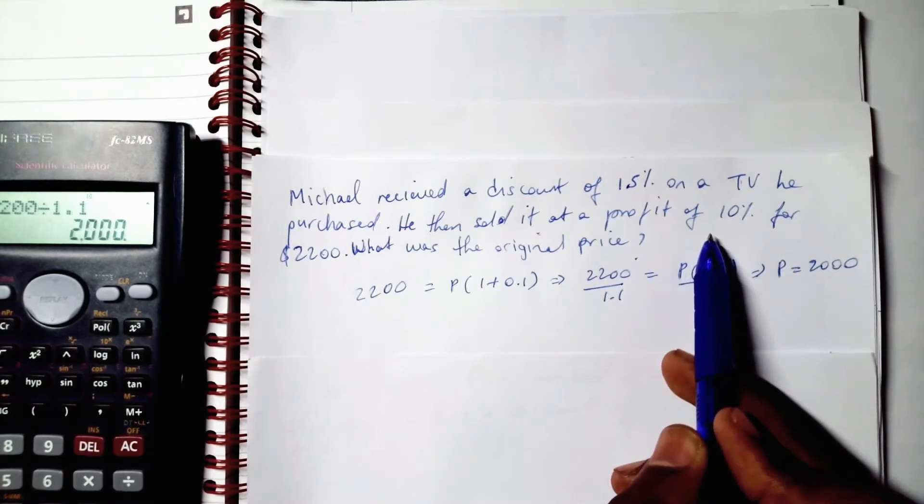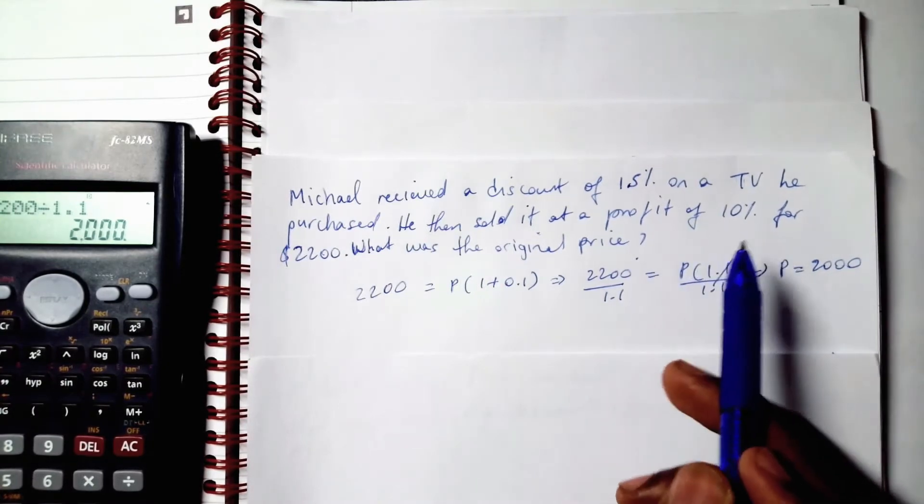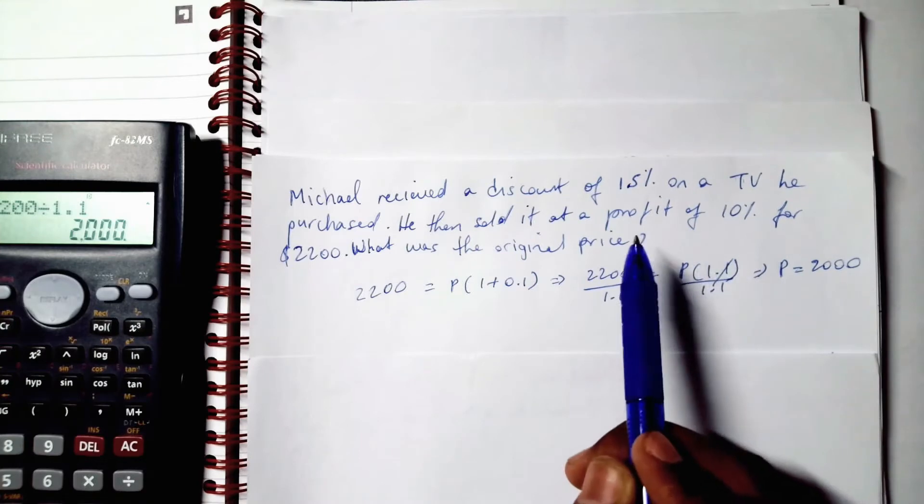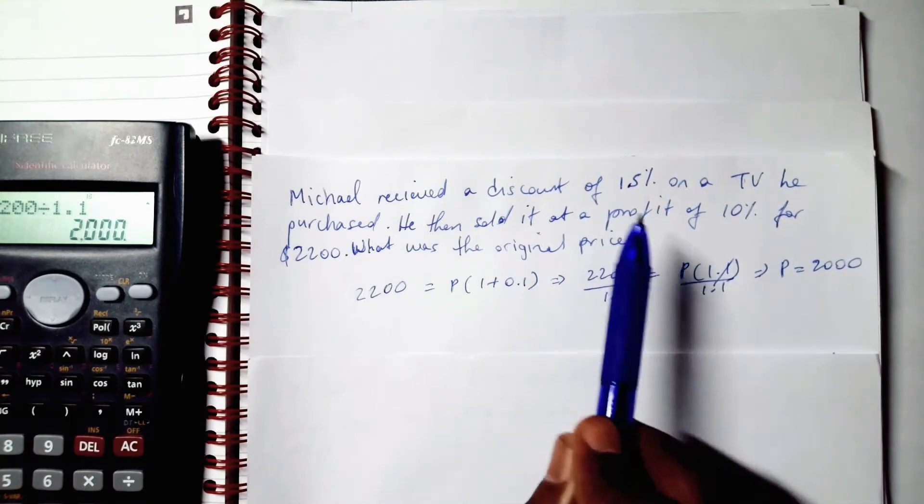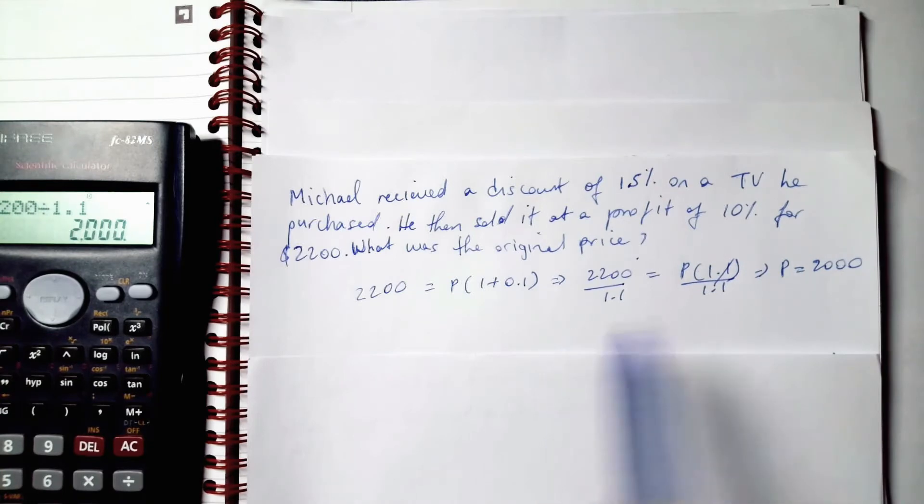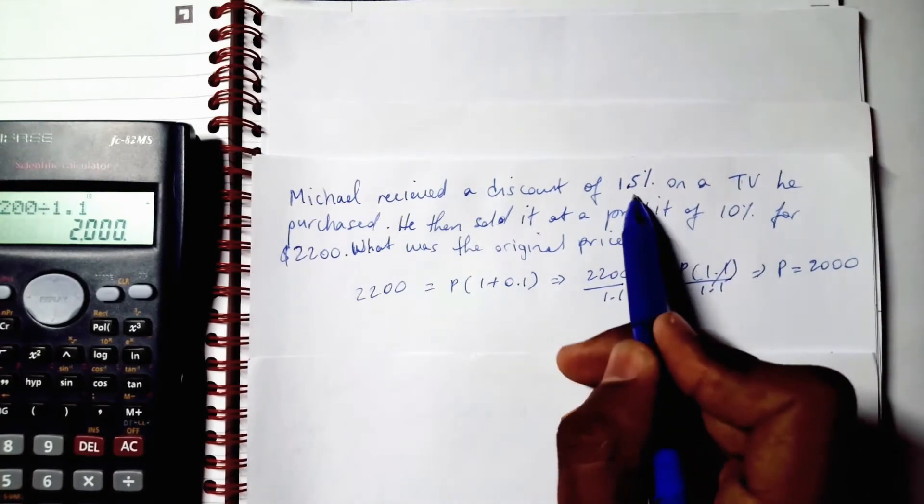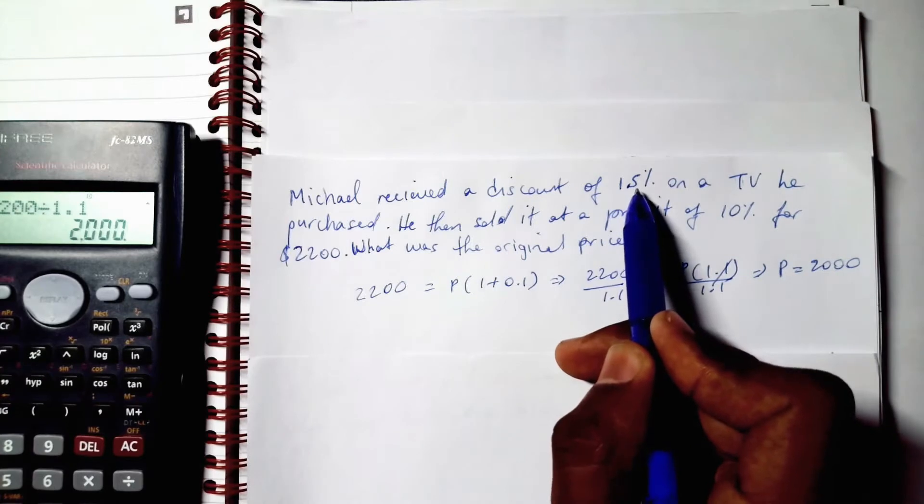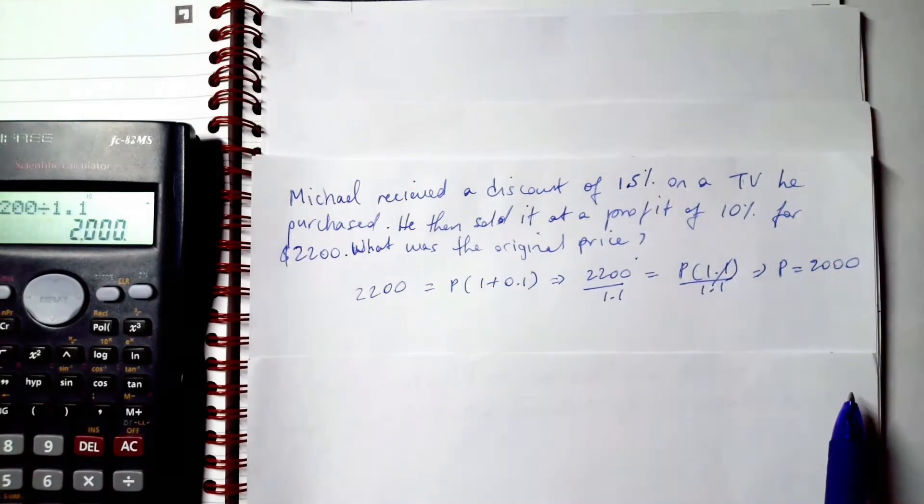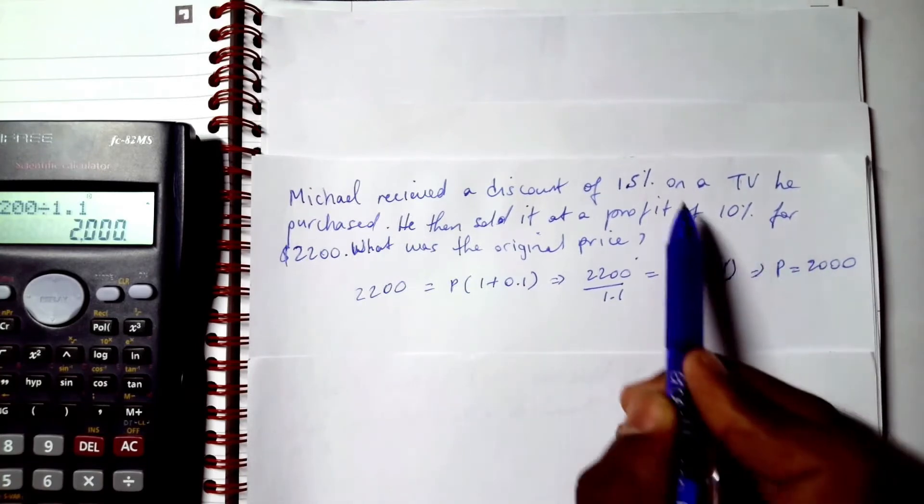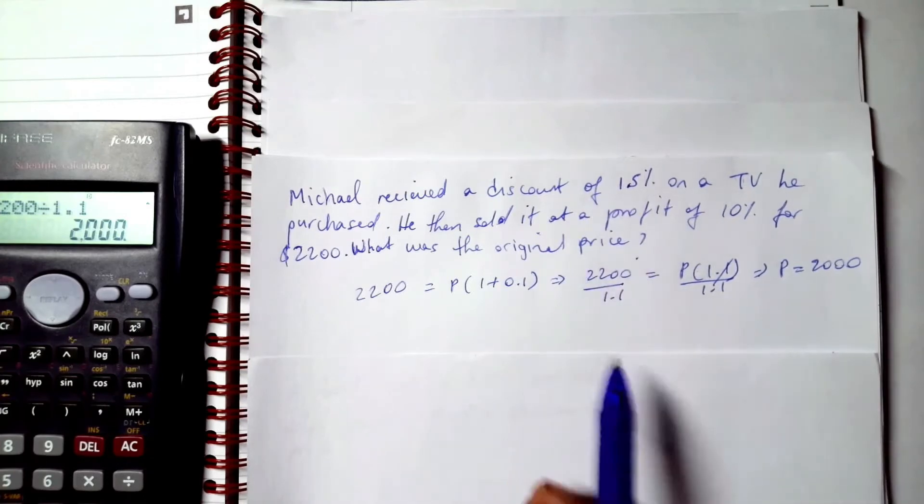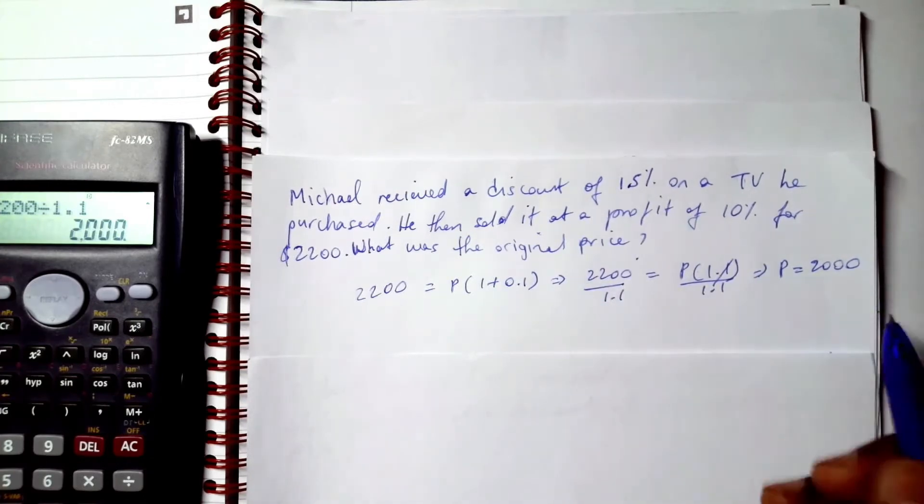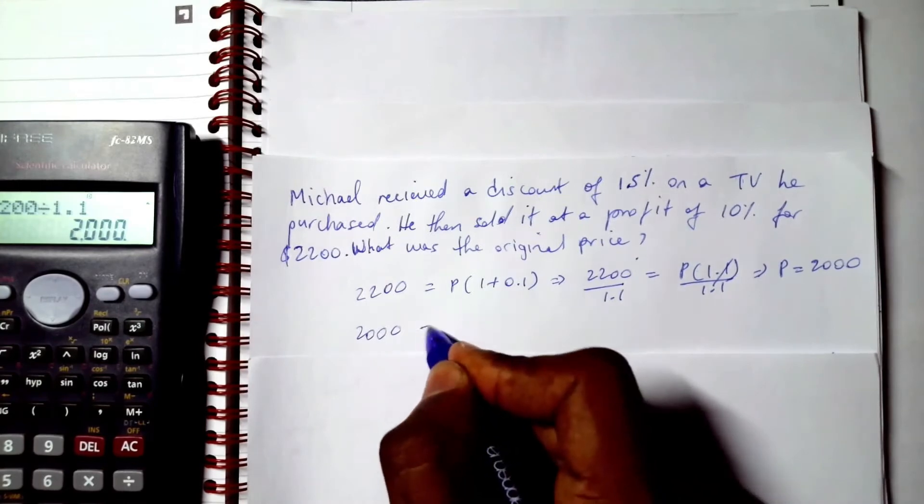So this was the value before the profit of 10% was applied. We need to take it one step back and find the value before the 15% discount was applied. This is the value after the 15% discount was applied.